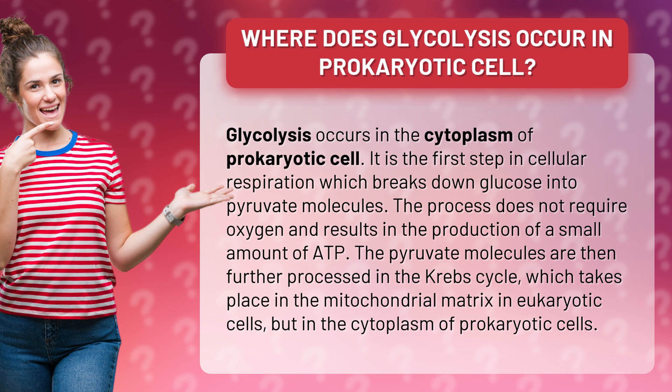The pyruvate molecules are then further processed in the Krebs cycle, which takes place in the mitochondrial matrix in eukaryotic cells, but in the cytoplasm of prokaryotic cells.